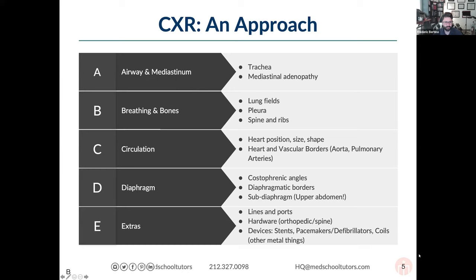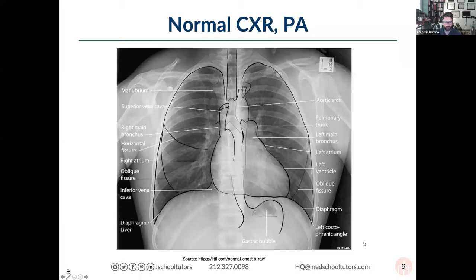What I'm showing everybody here is a normal chest radiograph in the PA projection, meaning the beam comes from the back of the patient and the patient's front is up against the detector — the beam goes from posterior to anterior, which is probably why they're named that. I'm going to take you through some anatomy with drawings and overlays over the chest radiograph to help identify normal anatomic structures.